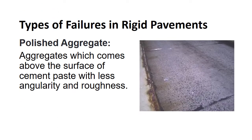Polished aggregate refers to aggregate which comes above the surface of the cement paste with less angularity and roughness. The main causes are repeated traffic applications; the age of the pavement also influences polished aggregate, and it will be quicker if the aggregate is susceptible to abrasion.